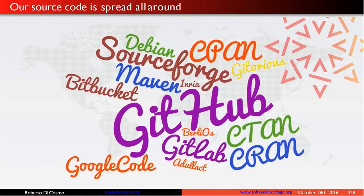But if you keep looking, you will see that actually our source code — our precious source code — is really spread all around the place. There are so many wonderful platforms we use to develop and distribute software. Looking at the pictures, I'm sure you will recognize platforms that were extremely popular 15 years ago and are not so popular today, and platforms that are extremely popular today but who knows where they will be in 15 years. We certainly miss a single place where all the source code ever written, with all its development history, is safely stored and accessible — no matter where it has been developed, distributed, or whether the platform has gone away.